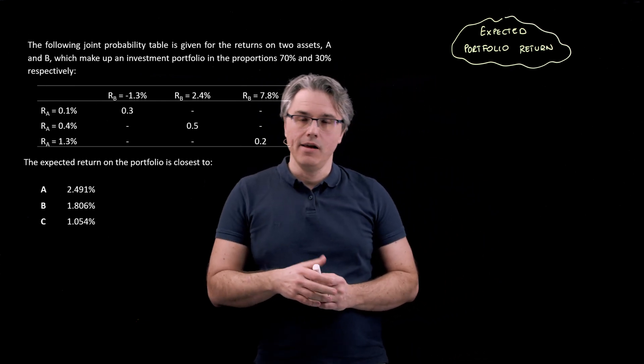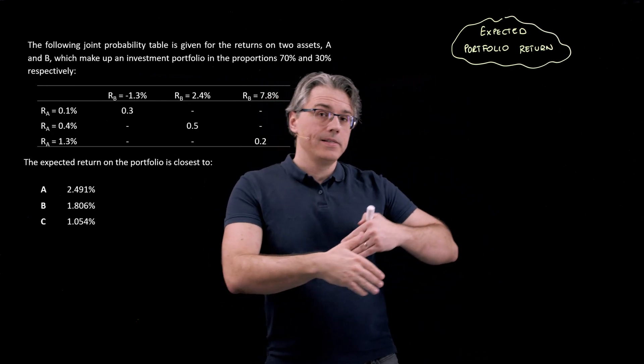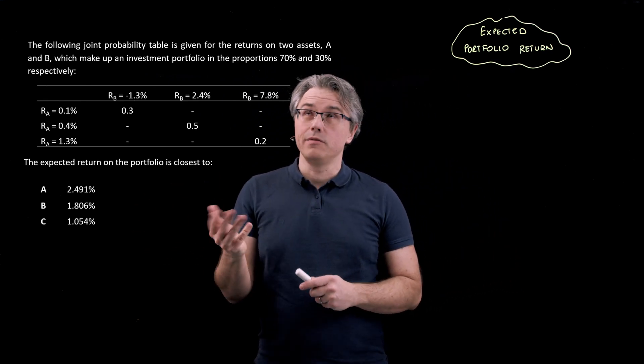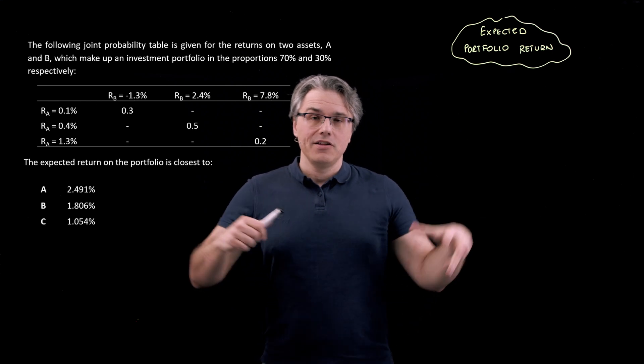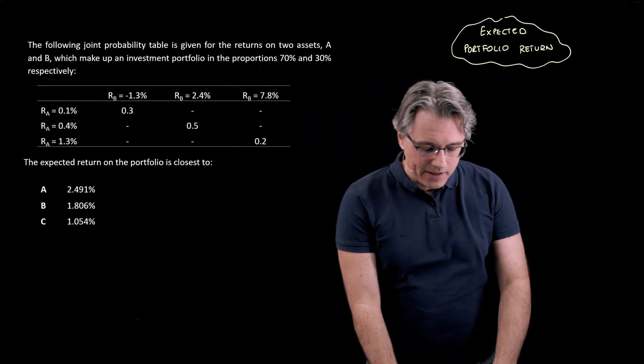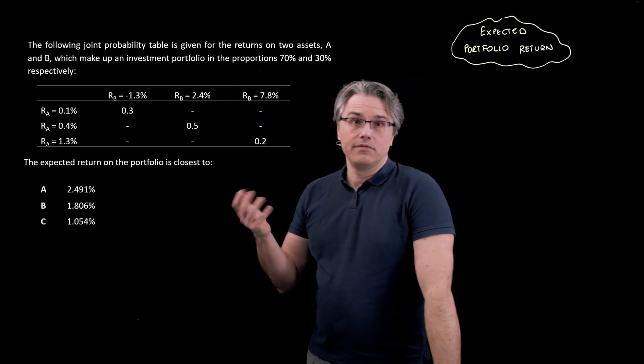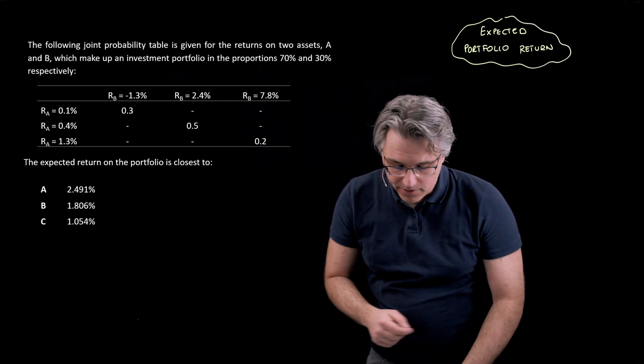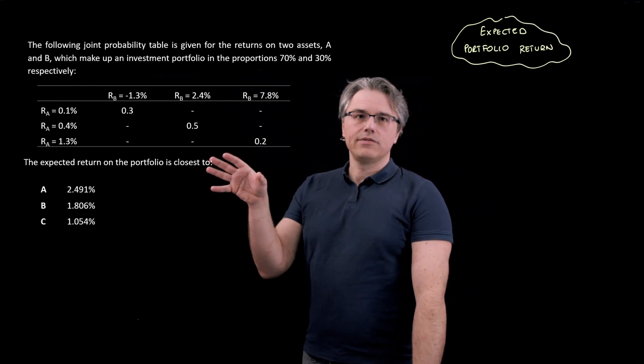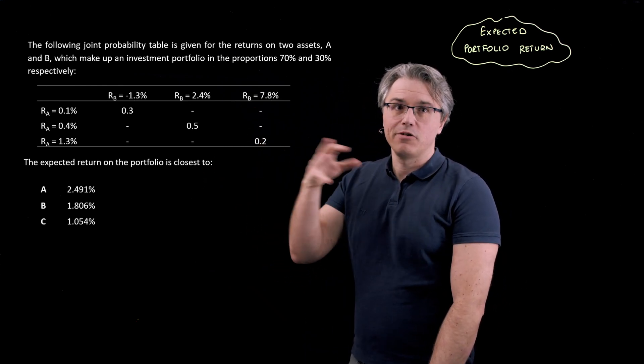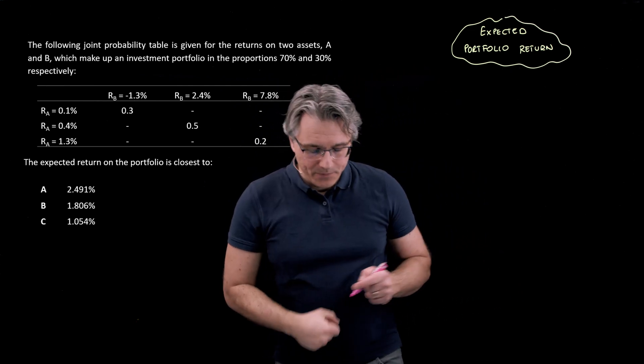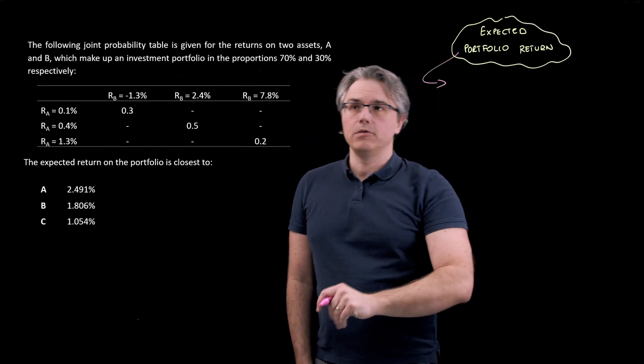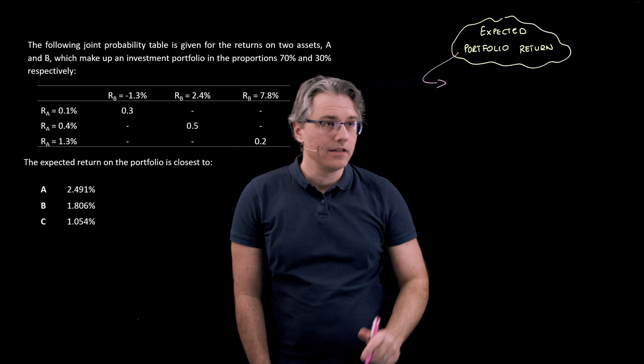But what we're going to do is build up from this question over what I think is going to be either three or four questions to actually get to a much more serious or difficult computation, which is going to include covariance, correlation, and then also portfolio variance. So a lot of stuff to come with the same scenario over the next couple of recordings. Right. What's the formula for expected portfolio return, at least when it is presented in this way?